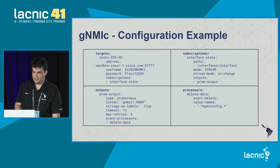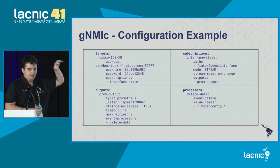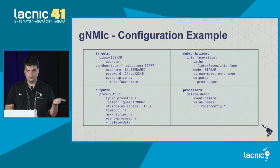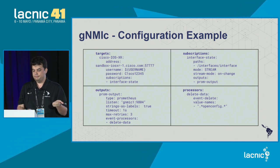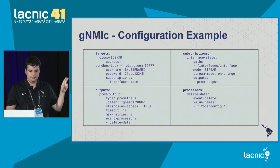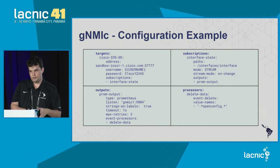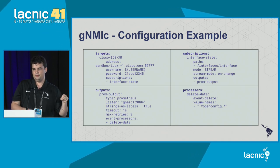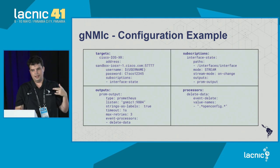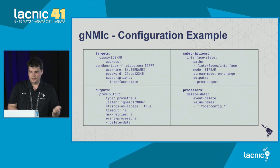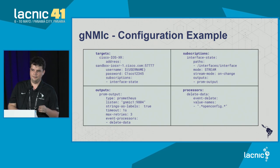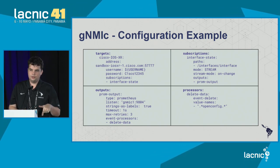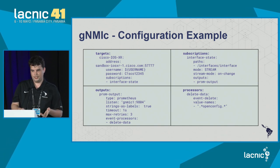Here is an example — let's start with the first quadrant, the target. I'm using Cisco on the Cisco sandbox environment. I'm taking the address information, specifying how I'll access it, passing a username and a password. In this example, the username is passed via environment variable. I'm using a YAML-like configuration file which you pass to your GNMI client.